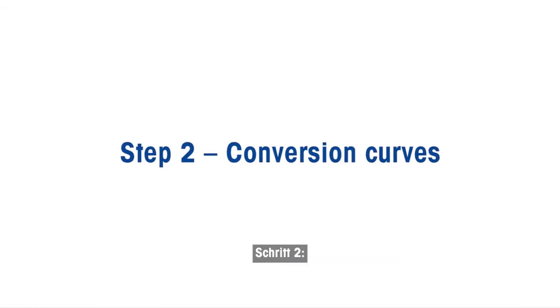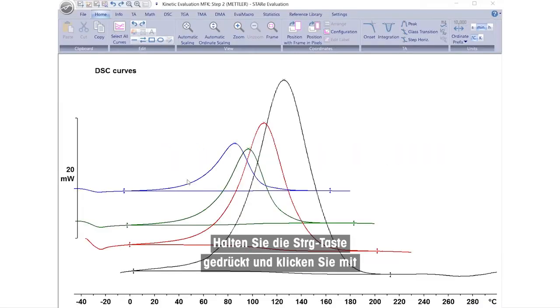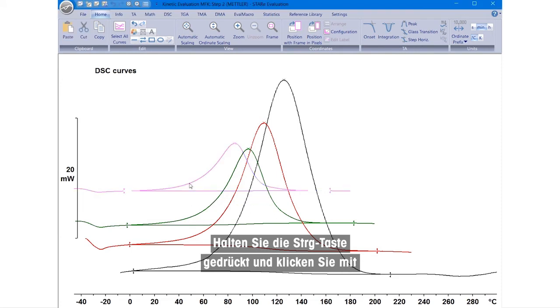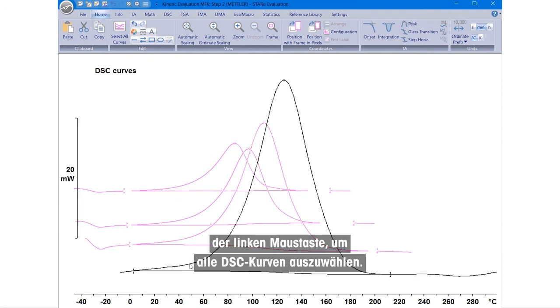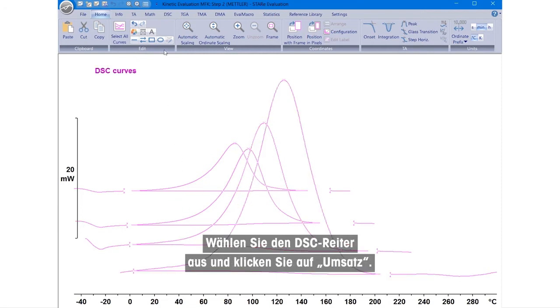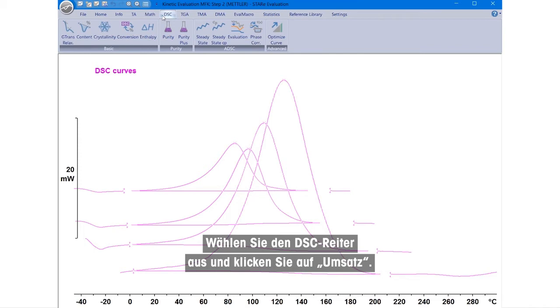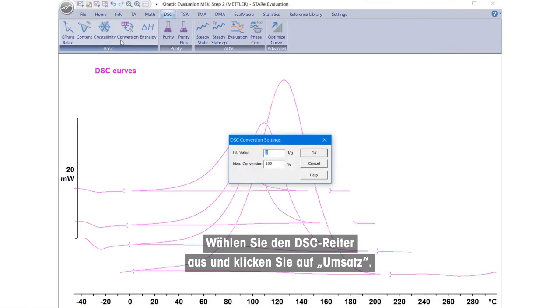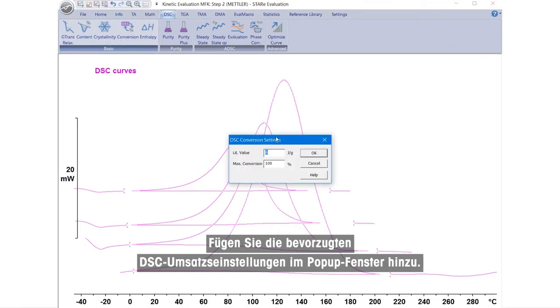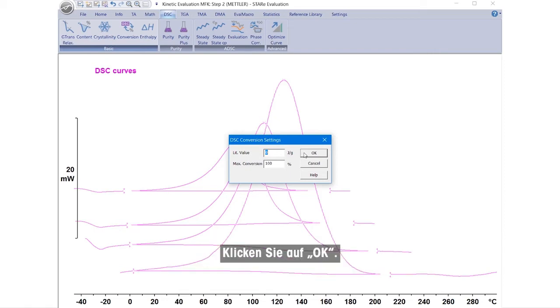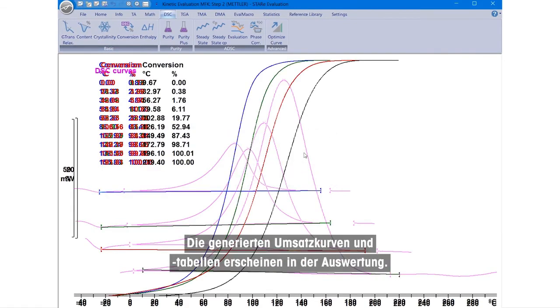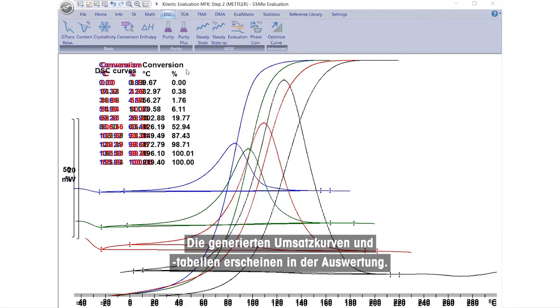Step 2. While holding down the Control key, left-click to select all the DSC curves. Select the DSC tab and click on Conversion. Add the preferred DSC conversion settings in the pop-up window. Click OK. The generated conversion curves and tables will appear in the evaluation.